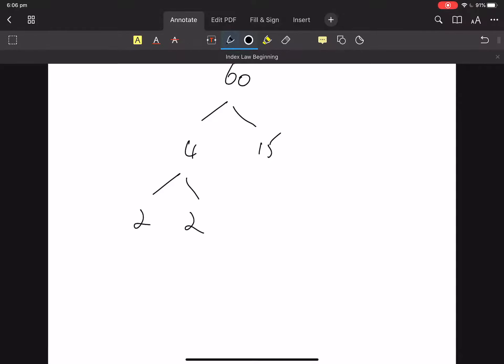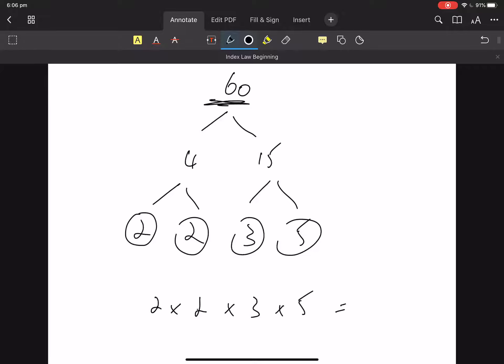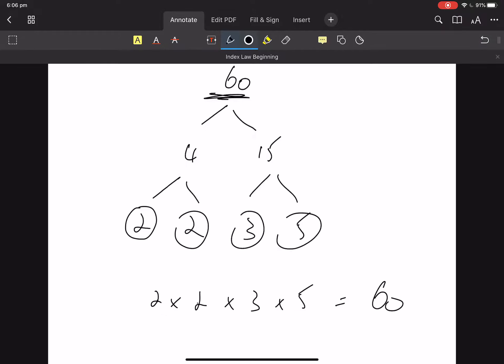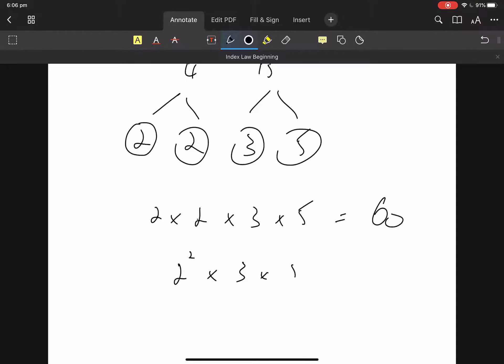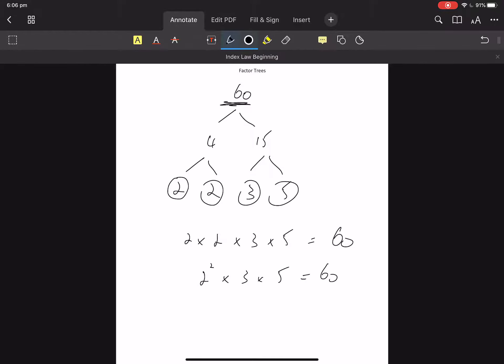4 is 2 times 2. And remember, when you get a prime number in your tree, you put a circle around it. 15 is 3 times 5, and they're both primes. So we're going to go 60 is 2 times 2 times 3 times 5. 2 twos are 4, 4 threes are 12, 4 twelves, 60. So it doesn't really mean too much, but we can write 60 as a product of prime numbers. Now we can actually look at that 2. There's 2 of those 2s there, so we could rewrite that as 2 squared times 3 times 5. And they're just playing around with numbers, but that's how we write 60.